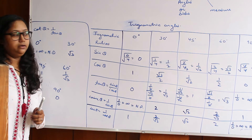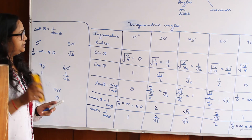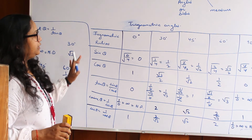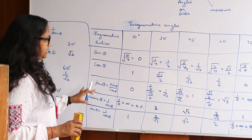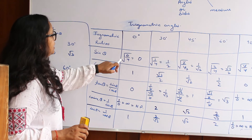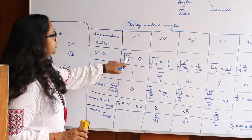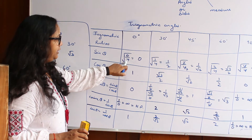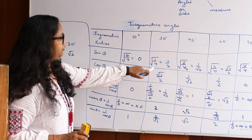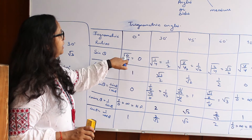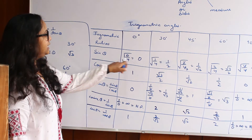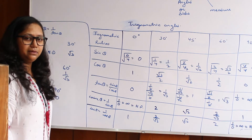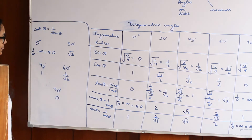We can now solve questions based on this table. You can see how the pattern of square root of 0 over 4 with increasing numerators makes the table easy to reconstruct and memorize.